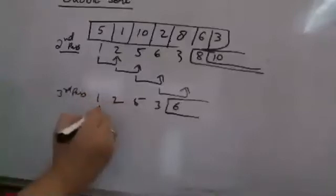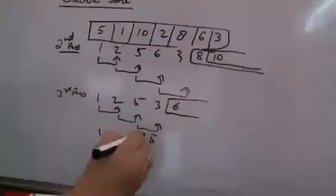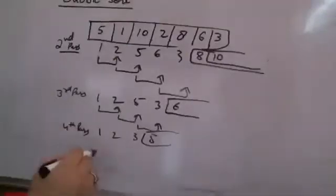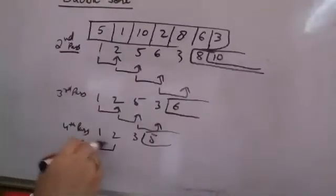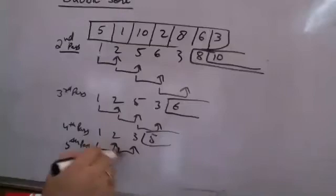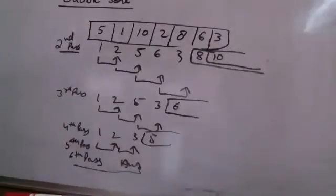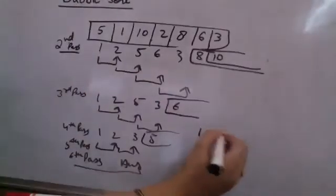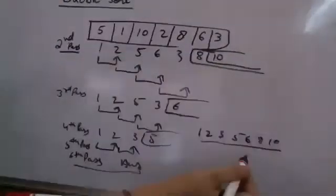After the third pass I repeat the same procedure. I check one to two, two to five, five to three — they are swapped. After the fourth pass I keep repeating until only two elements are left. There will be a fifth pass after which three is sorted, then two and one will be sorted after the sixth pass, giving the final sorted array: one, two, three, five, six, eight, and ten.